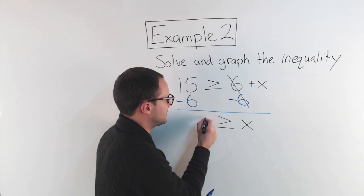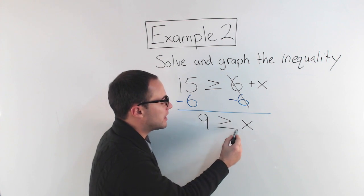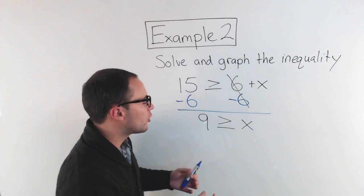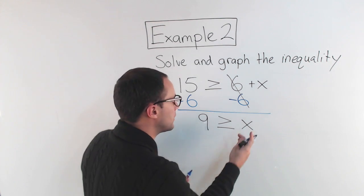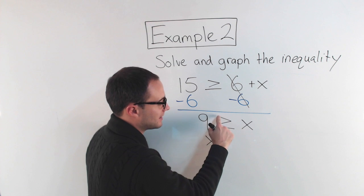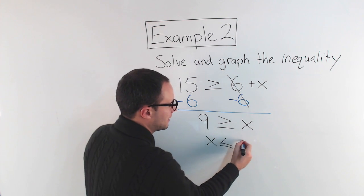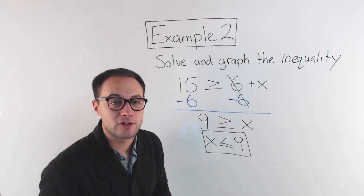And 15 minus 6 is 9. So I can read this as 9 is greater than or equal to x, but when you graph, you normally want to start with the variable first. So I'm going to rewrite this as x. If I read from right to left, it would be x is less than or equal to 9. So that's going to be my solution, and now let's graph it.